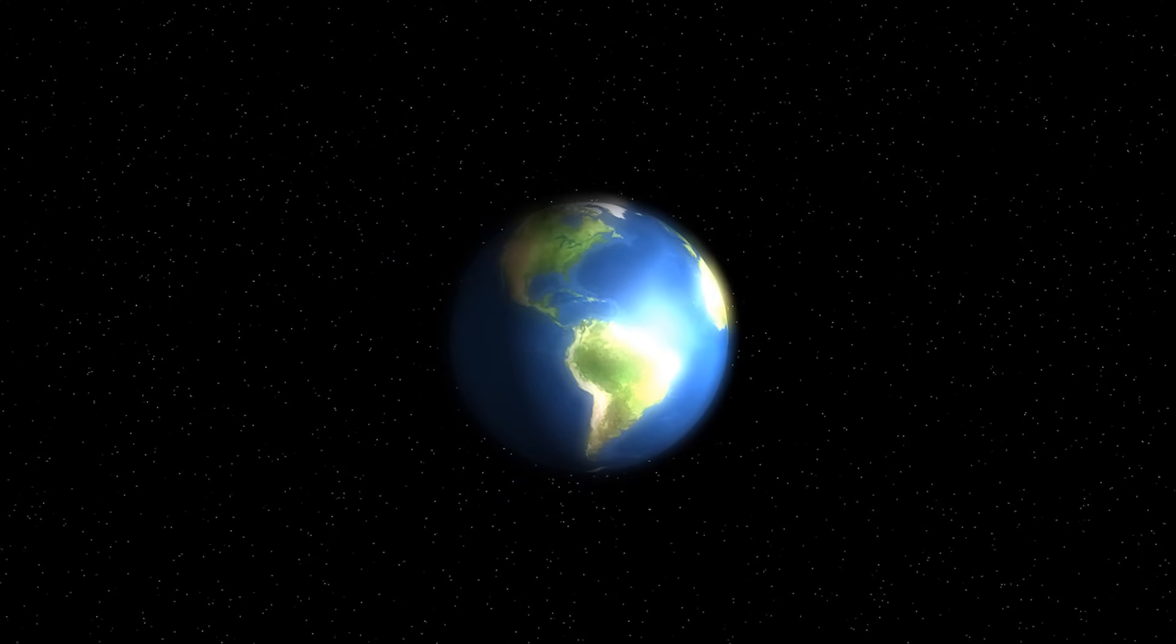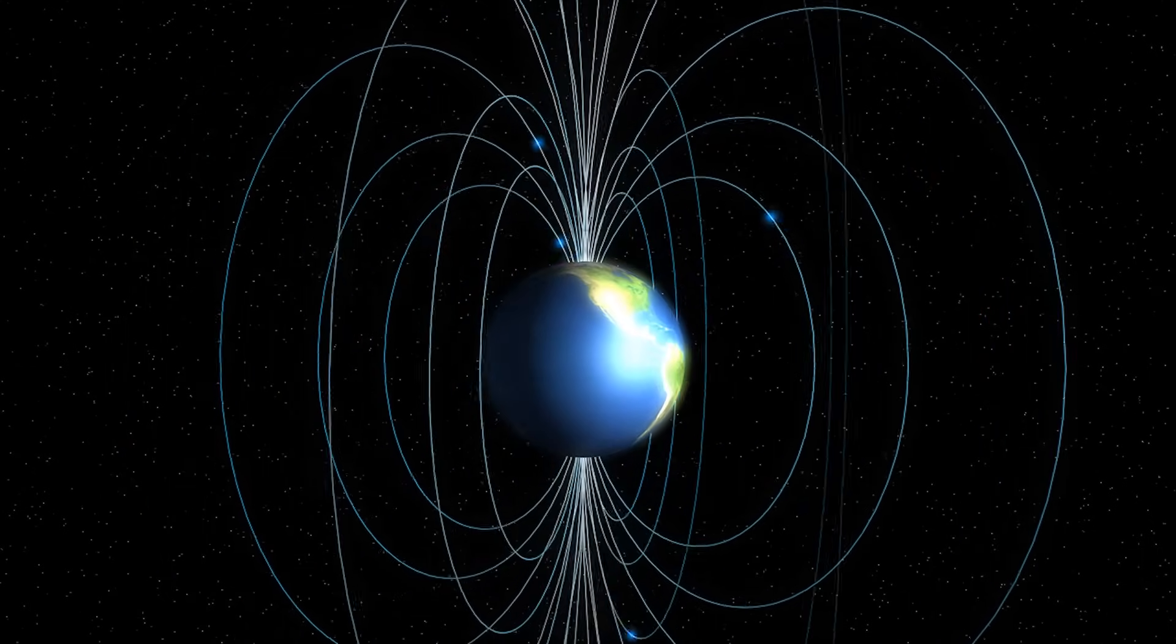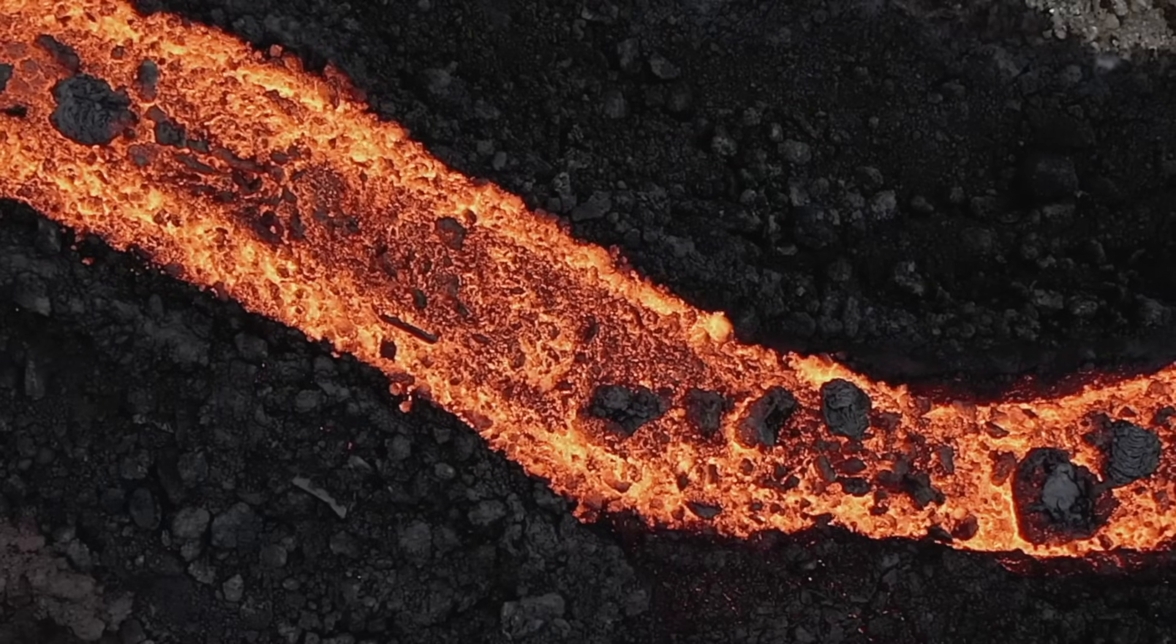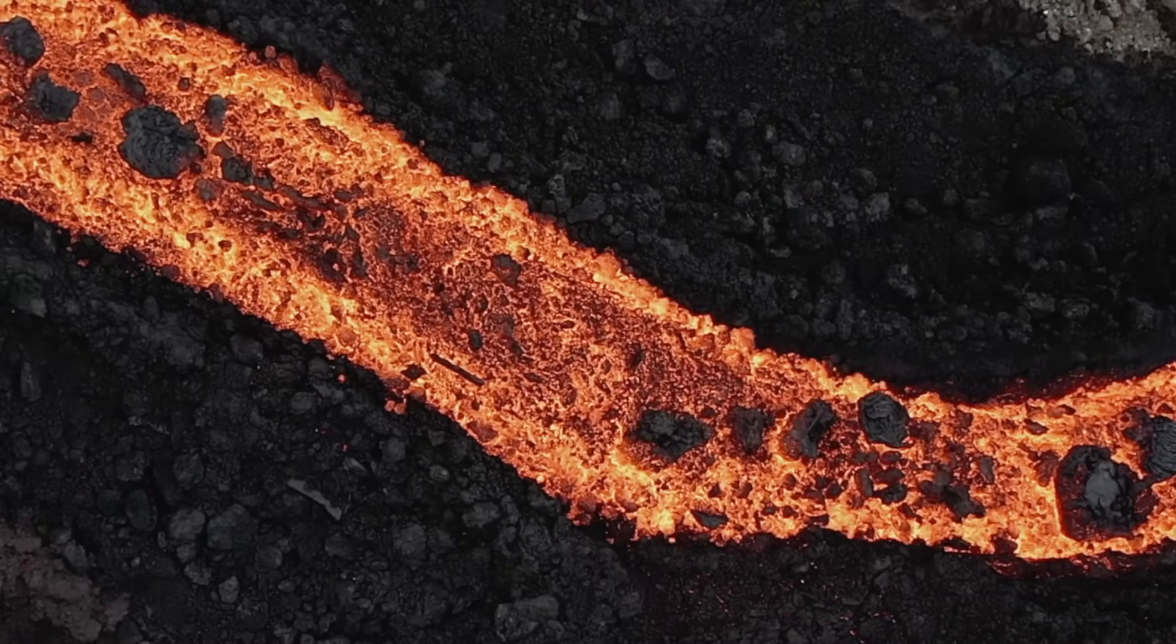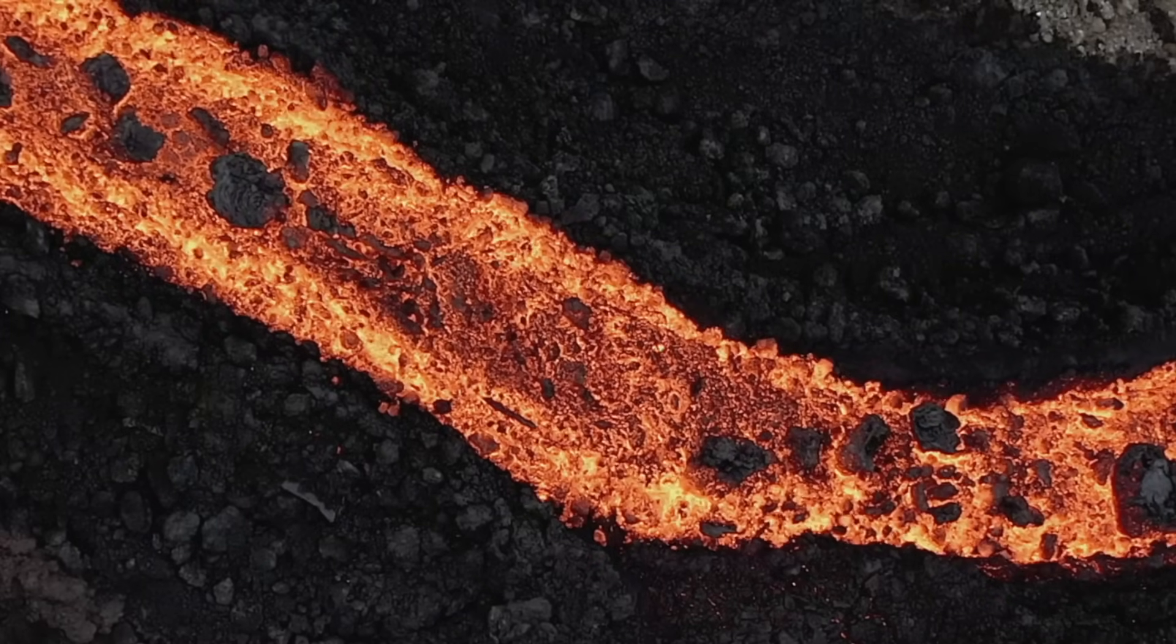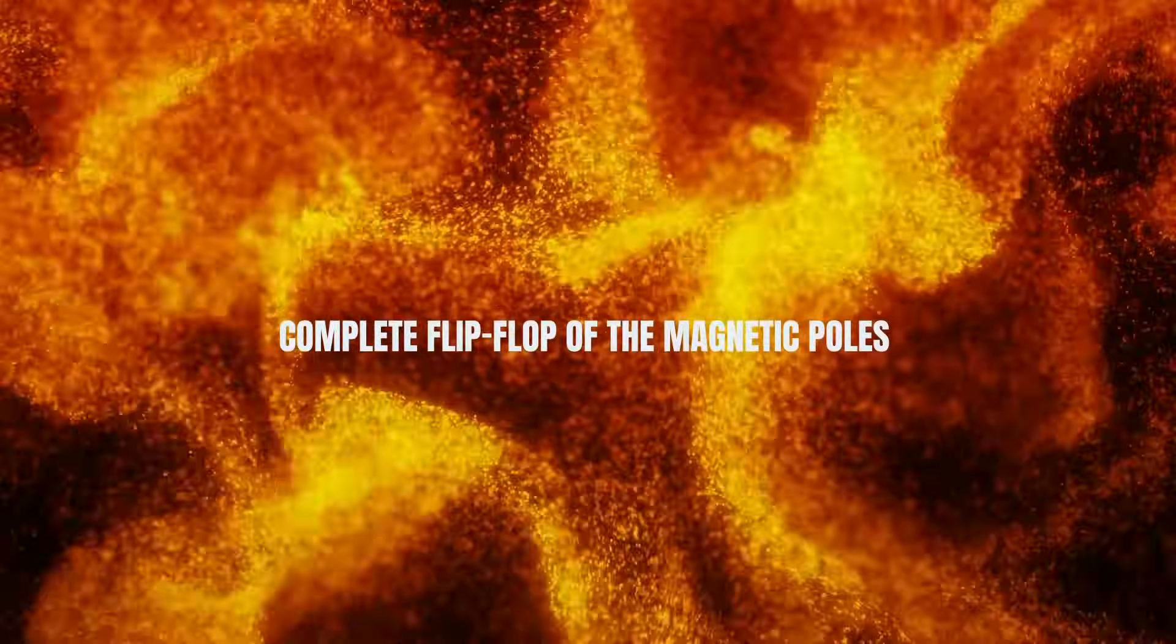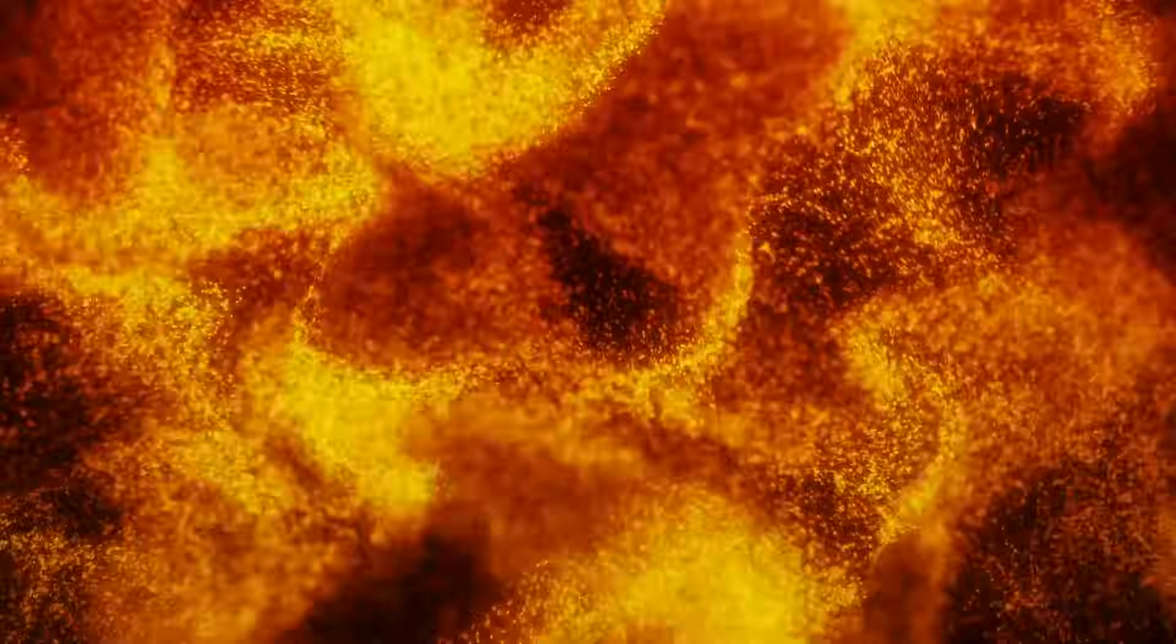Now, the interesting part is that this magnetic field isn't fixed. It can change over a very long time. Yes, the flow of molten iron changes. It's like a gigantic conveyor belt beneath the Earth's surface. When it shifts, it can influence the magnetic field. And if the movements are significant enough, they can lead to a complete flip-flop of the magnetic poles, what we call a magnetic pole reversal.